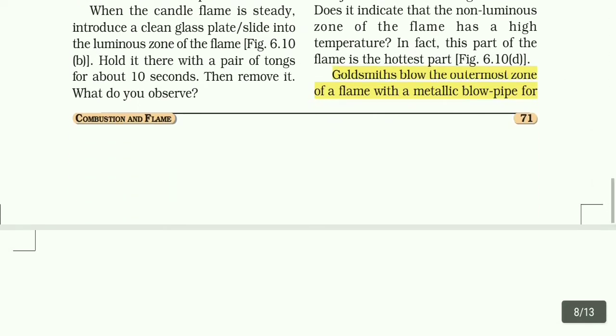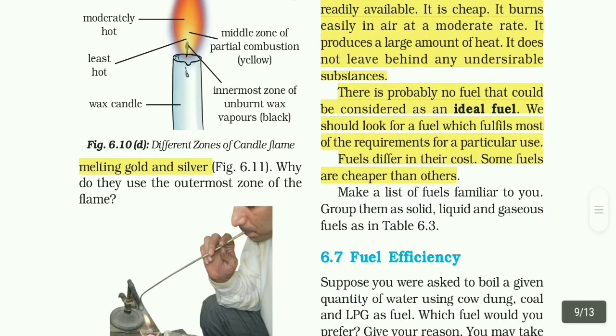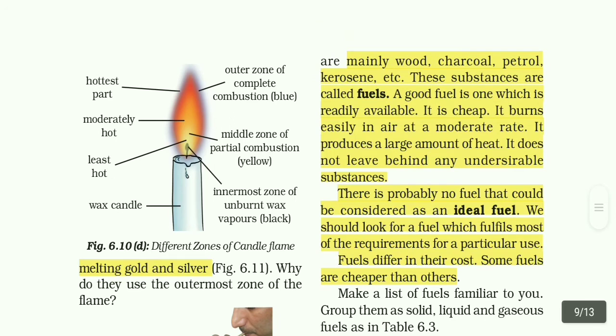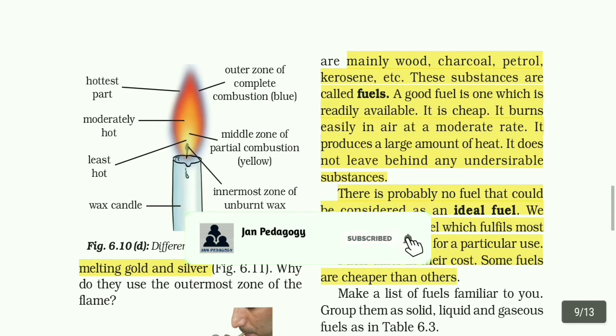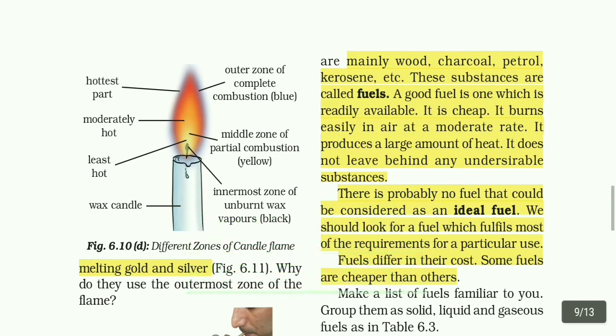Goldsmiths blow the outermost zone of the flame with a metallic pipe for melting gold and silver. If you want to use the flame for this purpose, you can use the outermost flame, because it is the hottest part of the flame. It is the outer zone of complete combustion.